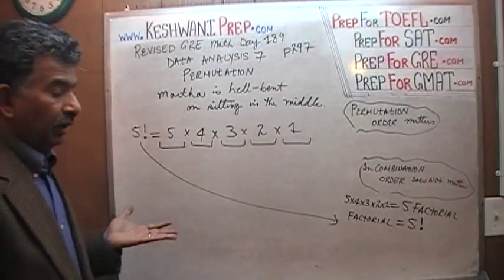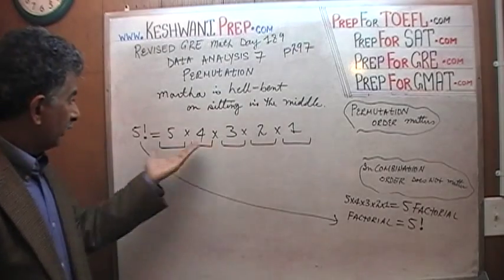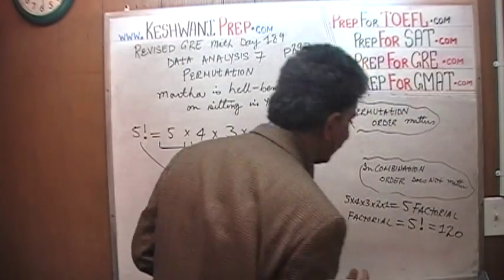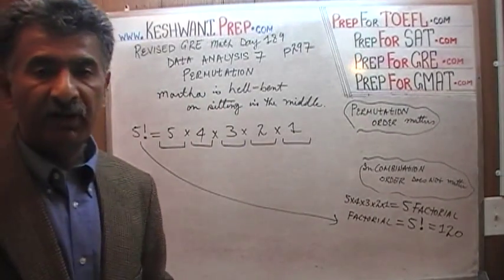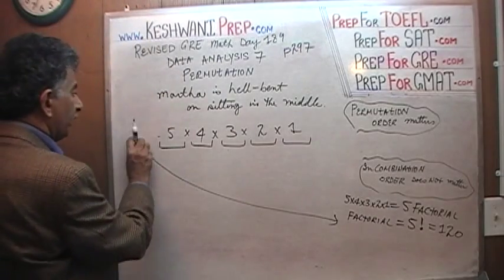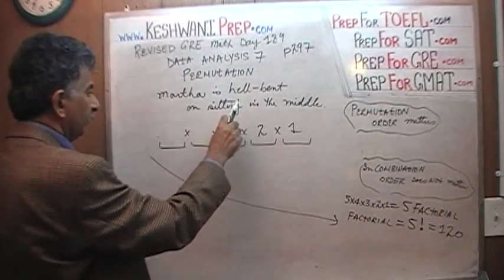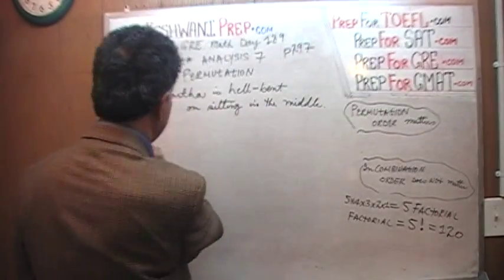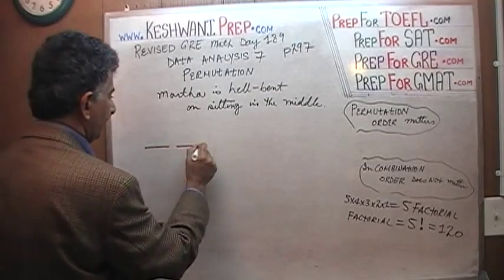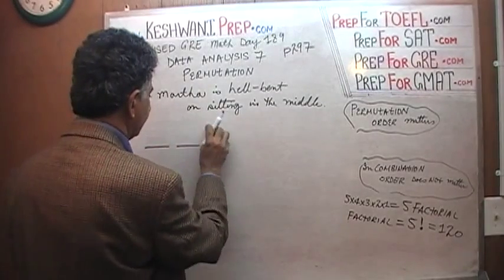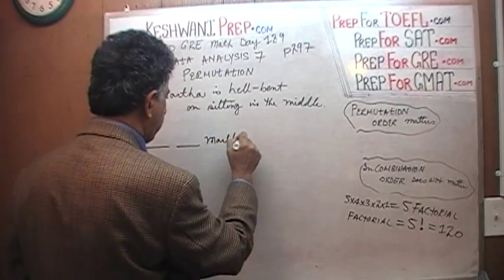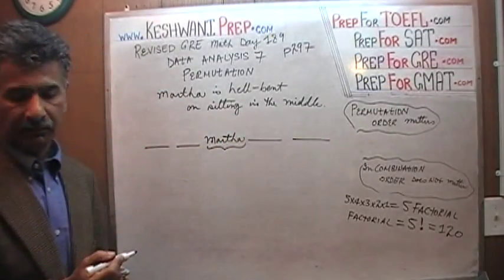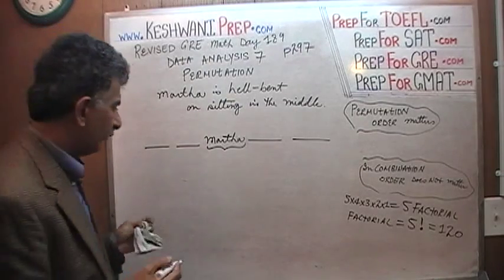So given that condition now, how many choices do we have now? With no conditions as we saw yesterday, we had 120 different ways, 120 different choices as to how these five people could be arranged. Now, we have conditions to fulfill. We have conditions to meet, which is that Martha must sit in the middle.